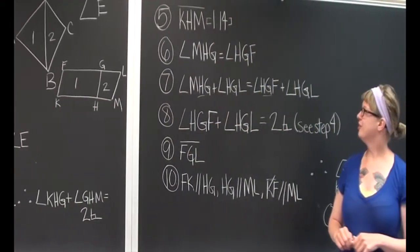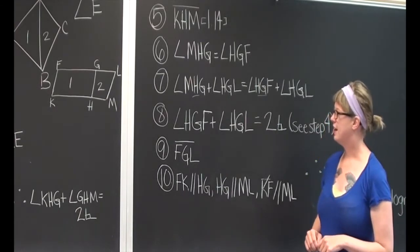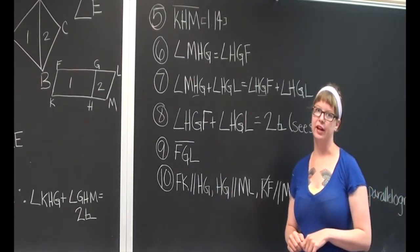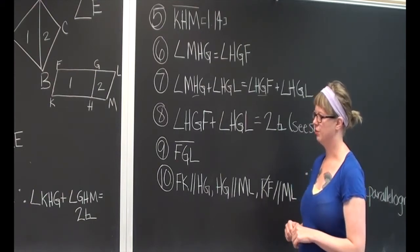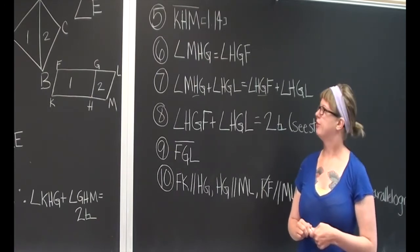And for this reason, now we can say that KHM is in a straight line. It looks that way, but we need to logically prove it, and we're able to do that by showing that the angles interior add up to two right angles.